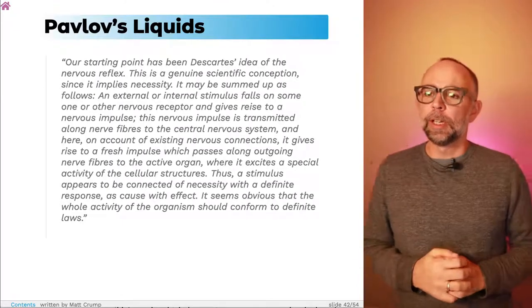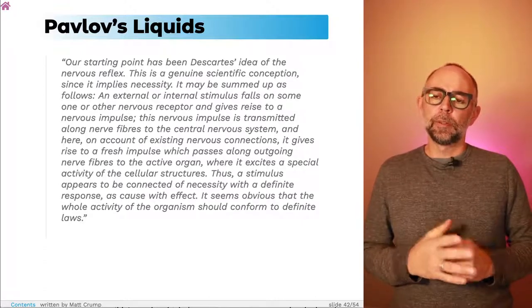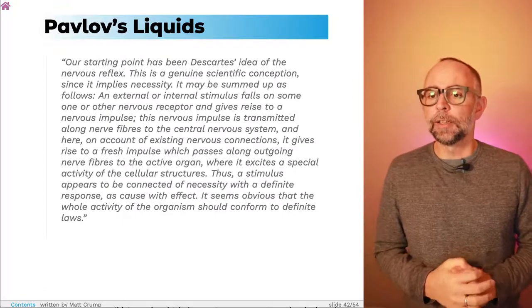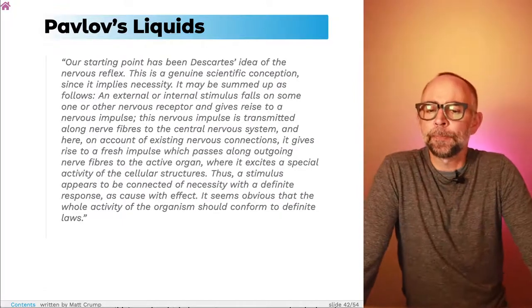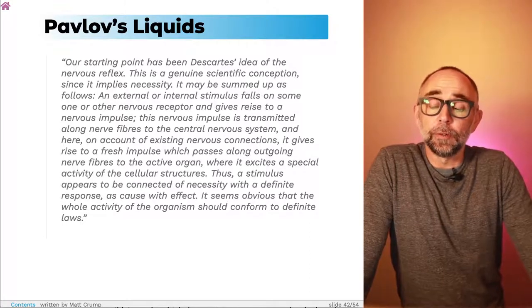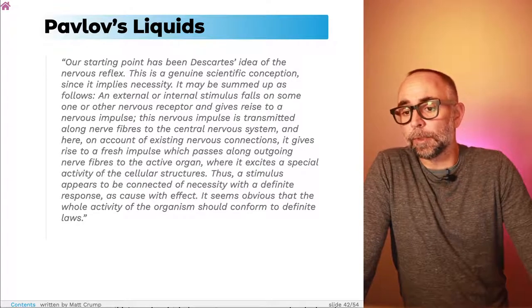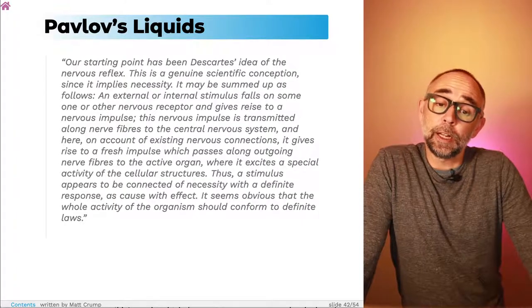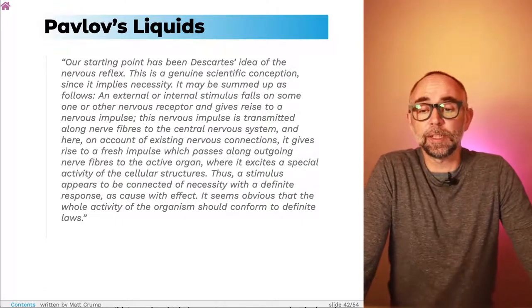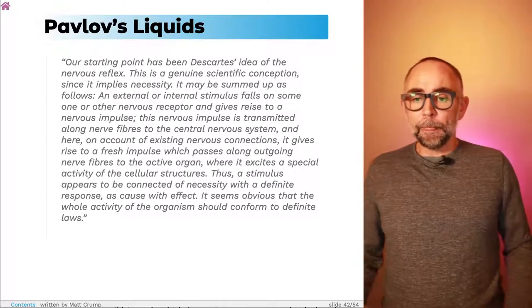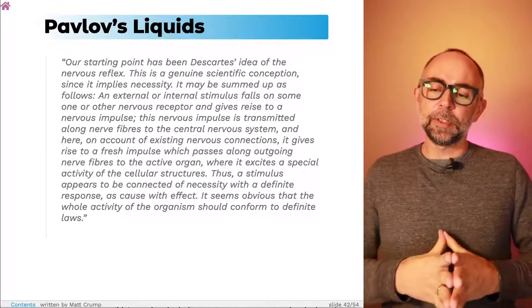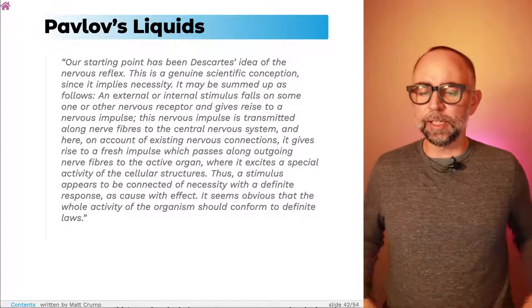So there's a philosopher thinking about some ways in which humans and animals might work. And we have physiologists much later reading Descartes and talking about learning more about these tube systems in our brain. So here we have Pavlov, a quote from his work. Just before he starts talking about classical conditioning and how he discovered it, he says, our starting point has been Descartes' idea of the nervous reflex. This is a genuine scientific conception since it implies necessity. It may be summed up as follows. An external or internal stimulus falls on some one or another nervous receptor and gives rise to a nervous impulse. This nervous impulse is transmitted along nerve fibers to the central nervous system. And on account of the existing nervous connections, it gives rise to a fresh impulse, which passes along outgoing nerve fibers to the active organ, where it excites a special activity of the cellular structures. Thus, a stimulus appears to be connected of necessity with a definite response as cause is with effect.